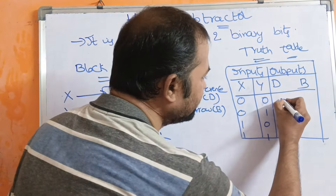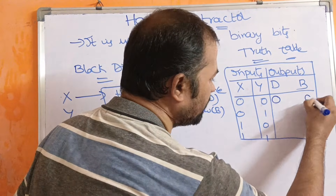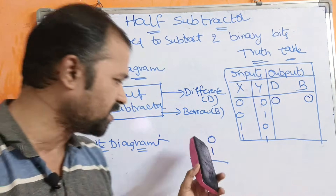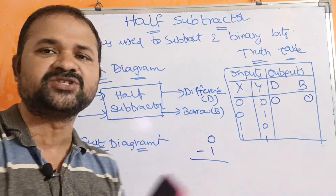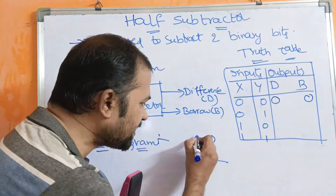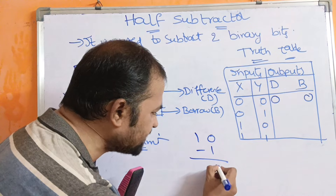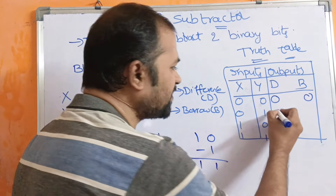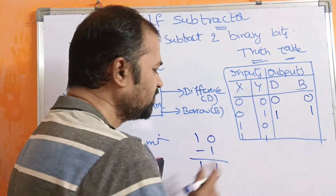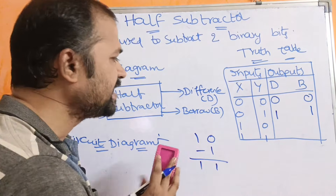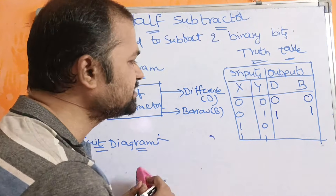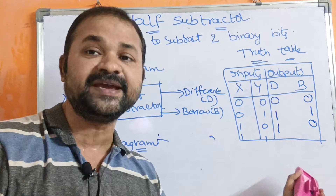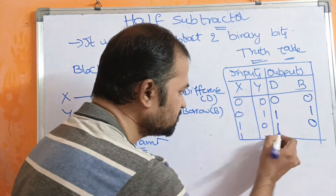So 0 minus 0 means Difference is 0, Borrow is 0. Where we have 0 minus 1, it is not possible to subtract 1 from 0, so we have to take a borrow. 0 minus 1 gives Difference of 1 and Borrow of 1. Where we have 1 minus 0, that is direct subtraction, so Difference is 1 and Borrow is 0.